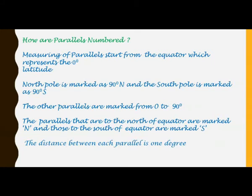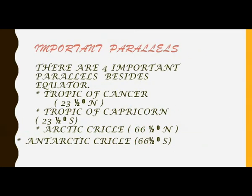The other parallels are marked from 0 to 90 degrees. The parallels to the north of the equator are marked by the capital letter N, and the parallels towards the south of the equator are marked by the capital letter S. The distance between each parallel is 1 degree. Now let us learn the important parallels.